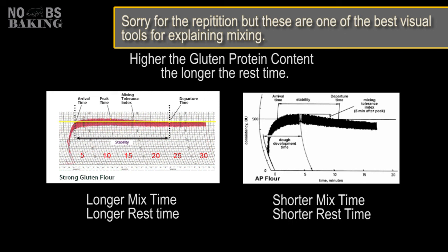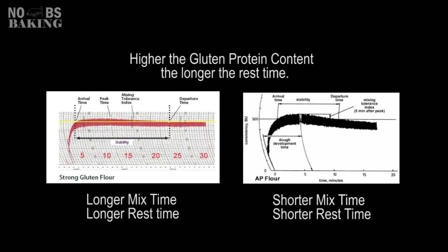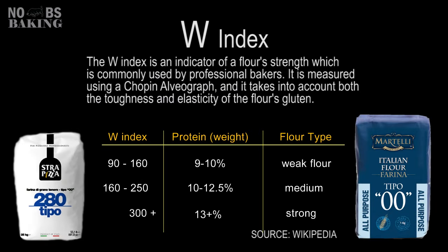These curves are generated with no salt in the dough, and as we know salt strengthens and tightens gluten, which would extend these curves out significantly. The W index is most commonly associated with durum wheat flour; however, many places in Europe use this rating system to include traditional flour. The W index is an indication of flour strength, usually associated with pizza dough and pasta production, but it's also used as an indicator of strength for bread flour in numerous parts of the world. So if you find a nice 00 flour you want to try and you see the W rating, now you know what it means.